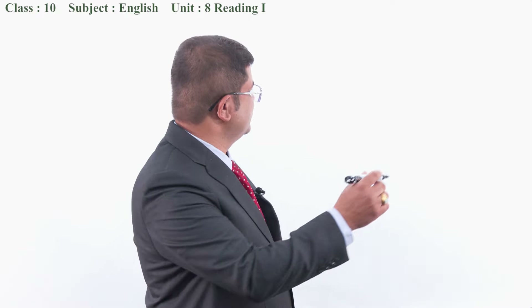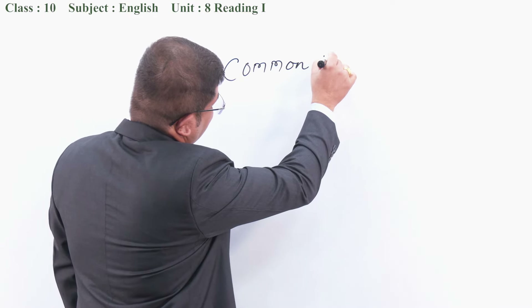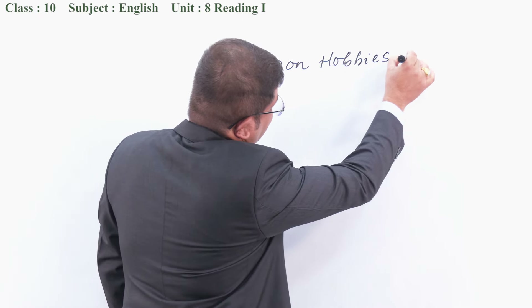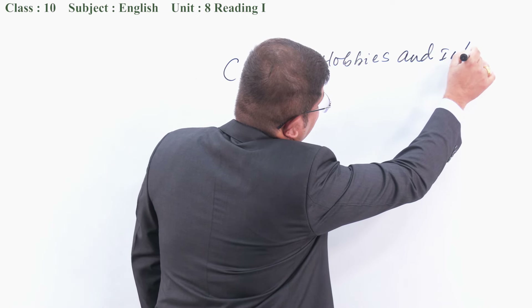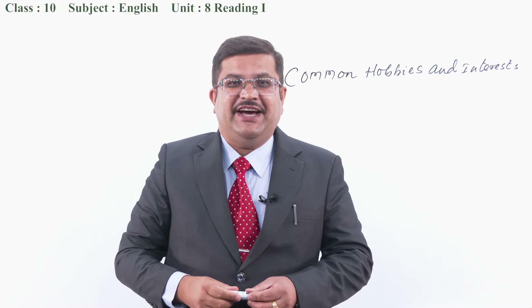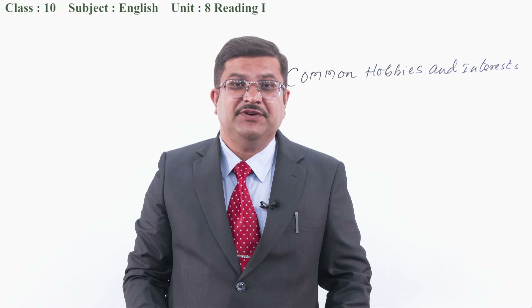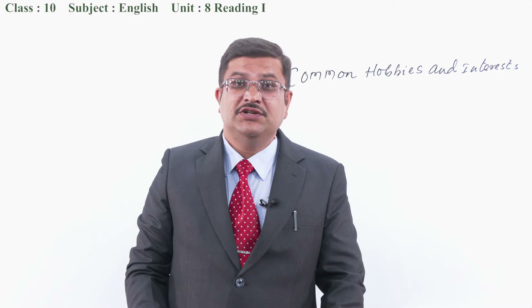Hello dear students, namaste. You are welcome to an English class of Grade 10, Unit 8. Please be ready with your English textbook. Today we will be talking about a reading comprehension. The title of the reading comprehension is 'Common Hobbies and Interest.' Did you find this title in your textbook? Please find this title on Reading One.